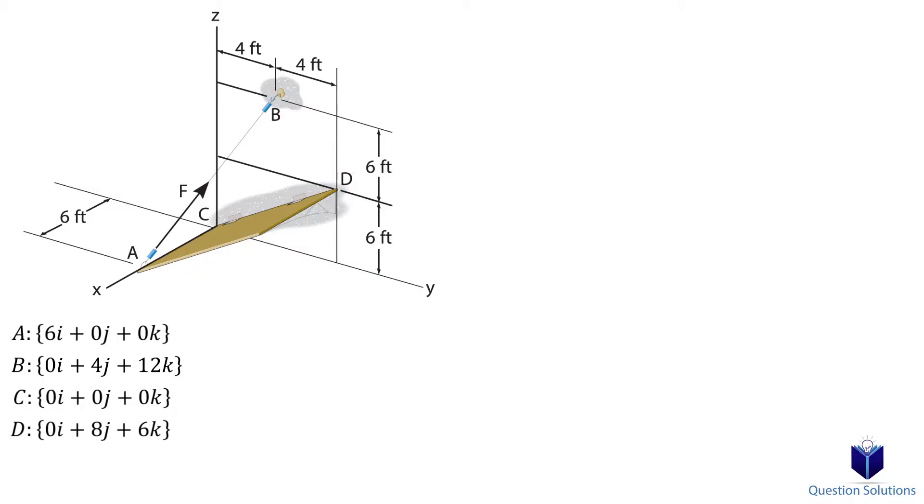To express our force in Cartesian form, we need to write a position vector from where the force originates to where it leads. In this question, we can see that it starts at A and goes towards B. Remember that with position vectors, we subtract the location of the second coordinate by the first coordinate. So our position vector AB is -6i + 4j + 12k.